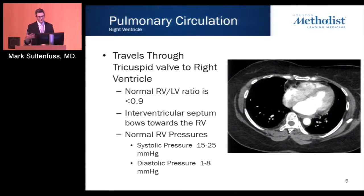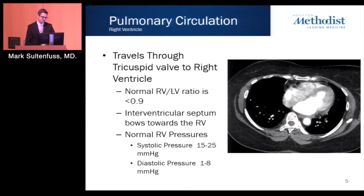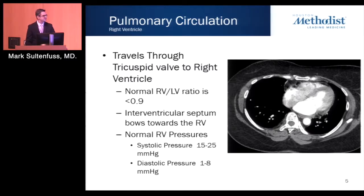Blood then travels through the tricuspid valve to the right ventricle. Anatomically, the right ventricle should be smaller than the left ventricle. You can use the RV-to-LV ratio to identify right heart strain related to pulmonary arterial hypertension and/or acute PE. This is measured on axial images that best approximate a four-chamber view, and an elevated right ventricular to left ventricular ratio is seen in both acute and chronic pulmonary hypertension.